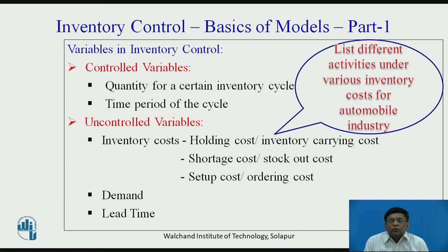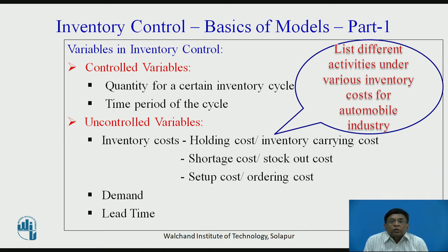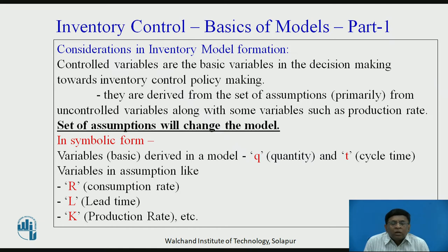At this point, I expect the viewers to list down different activities for the automobile industry, particularly pertaining to different types of inventory costs — for example, watchman salary and allied types of activities, and under which cost type they come. That is what I want you to think about for a while. Now, coming to the main area of today's discussion: how inventory models are formed.